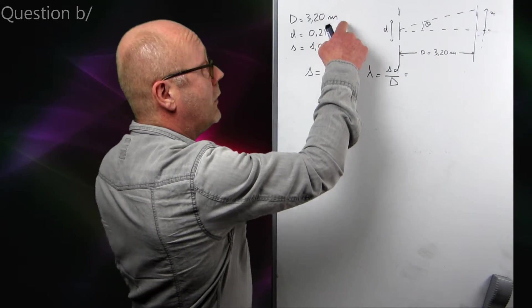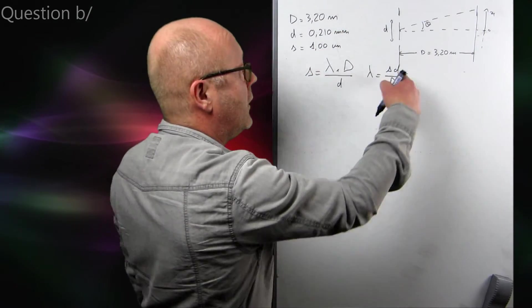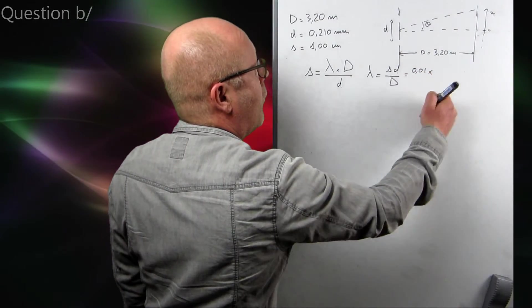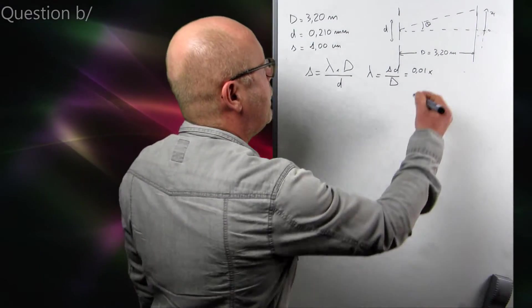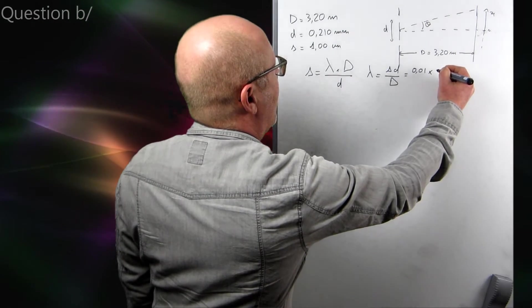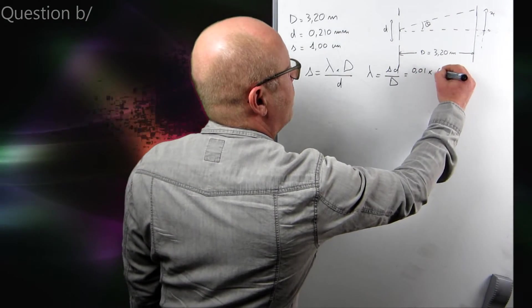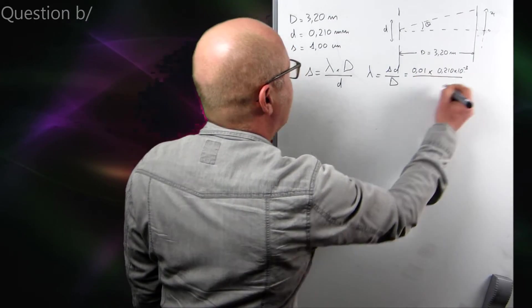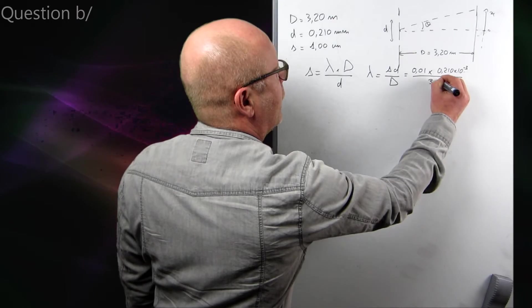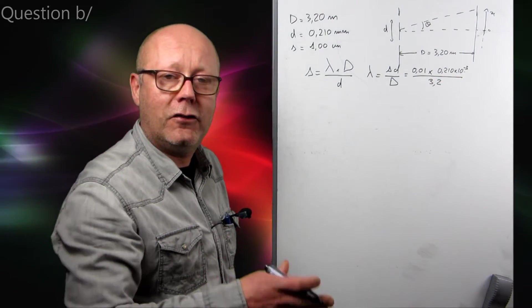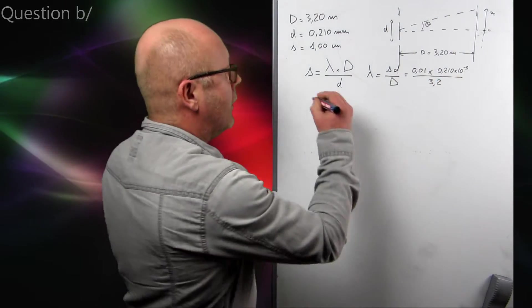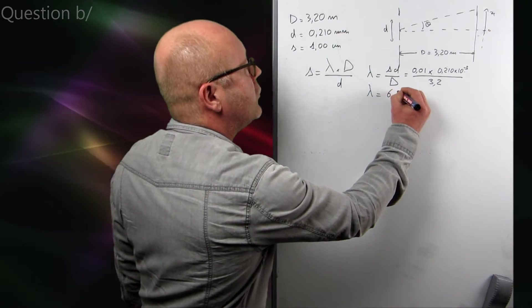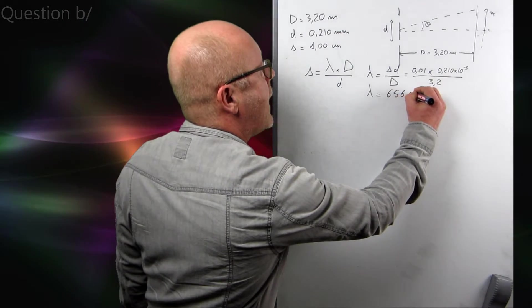And just plug in the numbers. Be careful, these are all different, it's all distances but in different units, so you need to convert. So, 0.01 meters for the distance between the fringes multiplied by the distance between the slits, 0.210 by 10 to the minus 3, because it's millimeters, divided by 3.2 meters, the distance from the slit to the screen. So, I found for lambda, when I did the calculation, 656 nanometers.